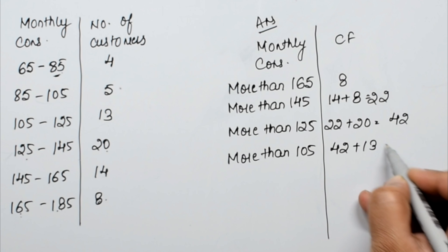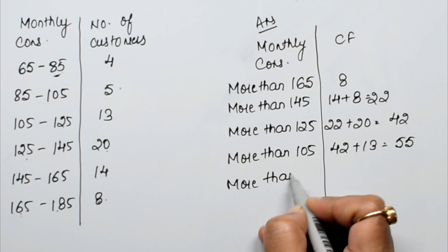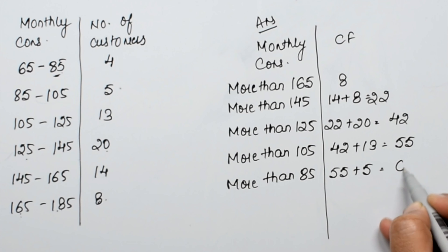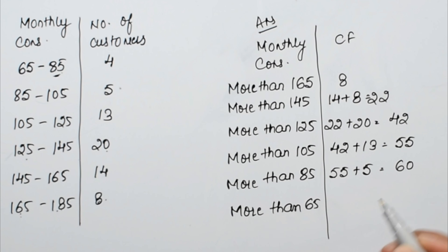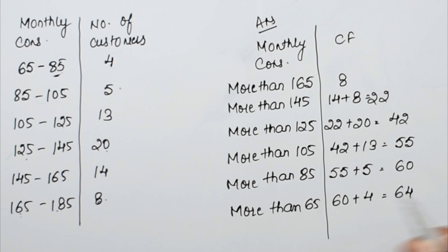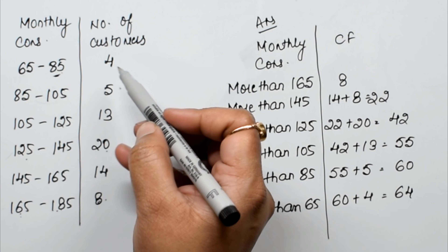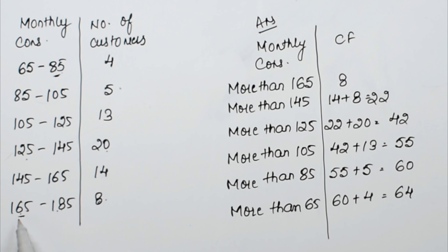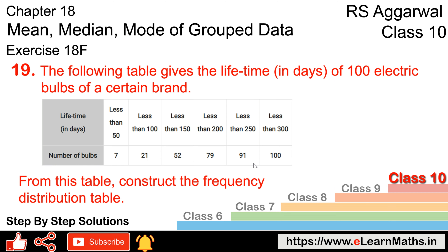More than 105 gives 42. More than 85: add the next frequency to 42 to get 55. More than 65: add last 4 to 60, giving 64. We started from the bottom because in cumulative frequency we keep adding — if we start from the top we would need to subtract. That's why for more-than type we start from the lower limit.